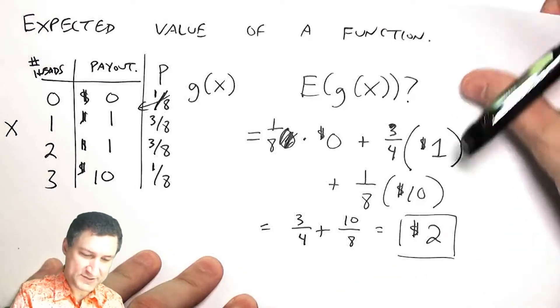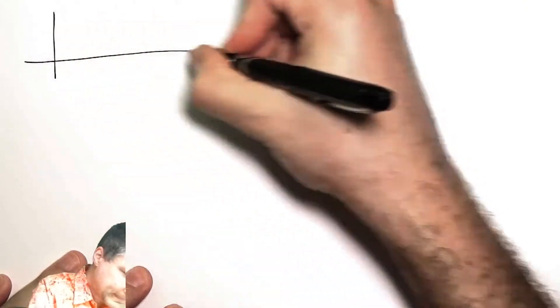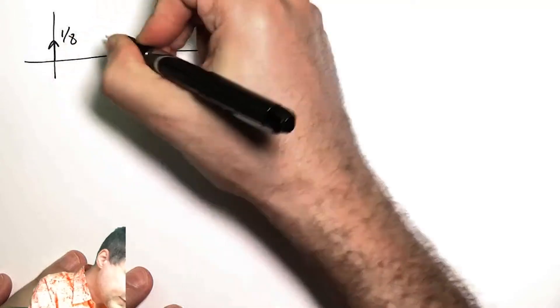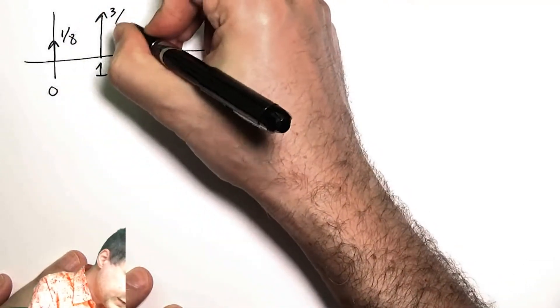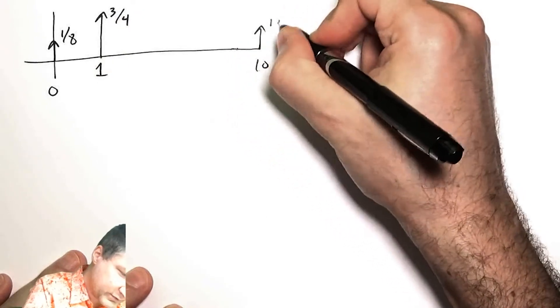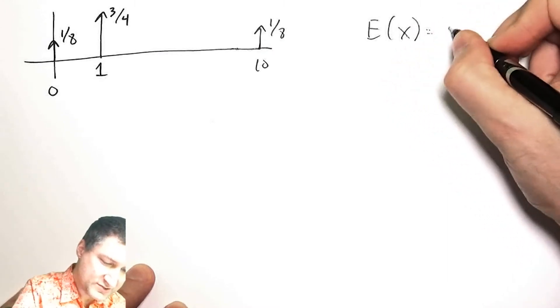Let's refresh our memory. We have this PMF. I had 0 with probability 1/8, 1 with probability 3/4, and 10 with probability 1/8. And we computed the expected value of this was 2.